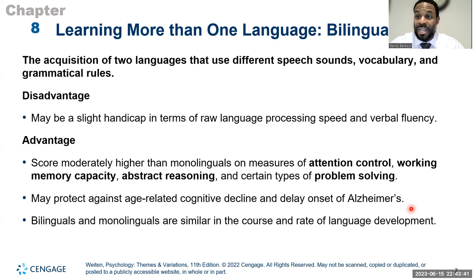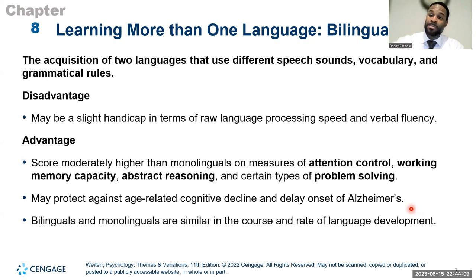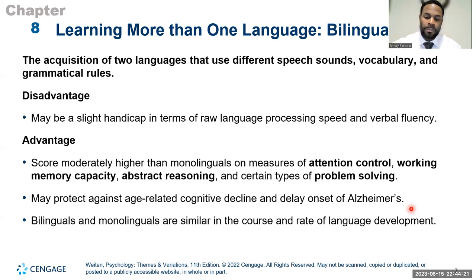Research also suggests bilingualism may protect against age-related cognitive decline, like Alzheimer's and certain types of dementia, potentially delaying their onset. Bilinguals and monolinguals are fairly similar in the rate of language development regardless of when they start. Learning a new language involves a steep learning curve as you navigate grammatical rules, tenses, past participles, prepositions, and other intricacies across different languages.